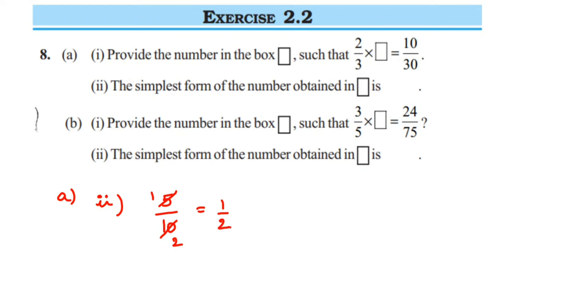Now we got 1 upon 2. Can we cancel it further? No, we cannot cancel it further. This is the reduced form or the lowest form. So in this box, the simplest form of 5 by 10 is 1 by 2. That was the first question.